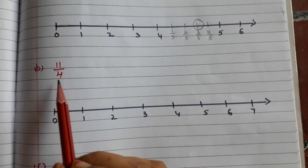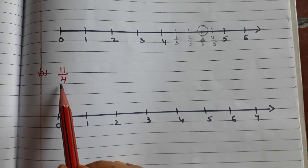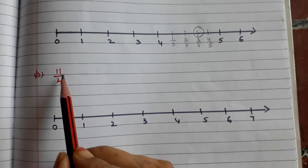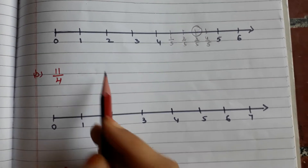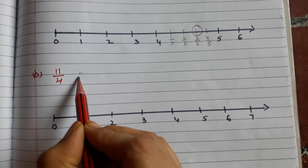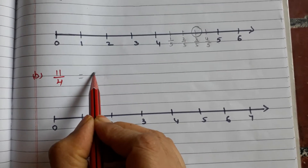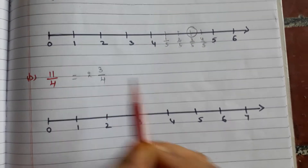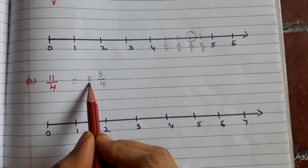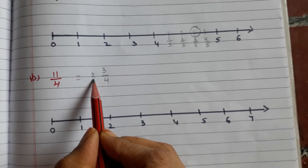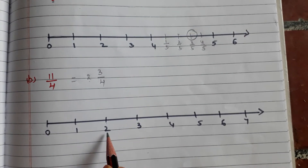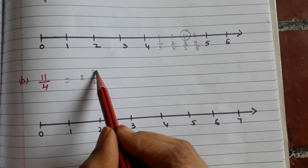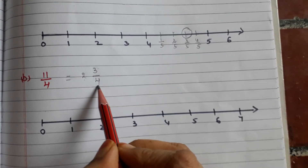Here we have an improper fraction. First we have to convert the improper fraction into a mixed fraction — the mixed fraction is 2 3/4. What is the whole number part here? It's 2. First we have to place the whole number on the number line — here is 2. After that, 3/4 on the number line.